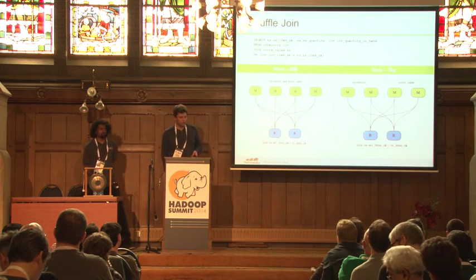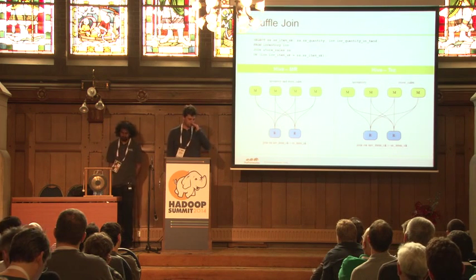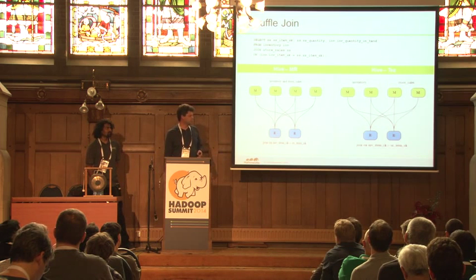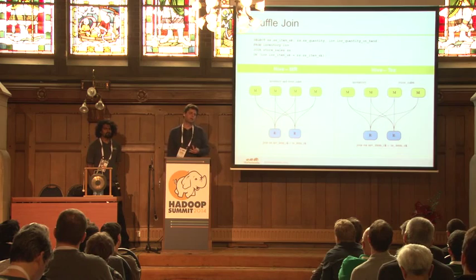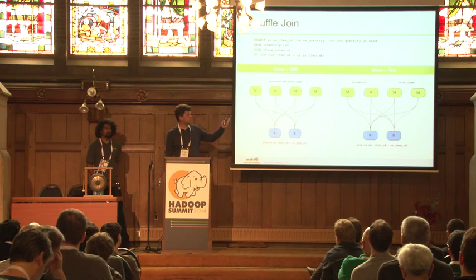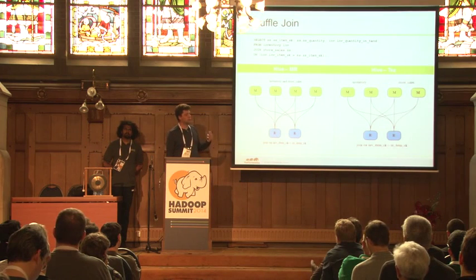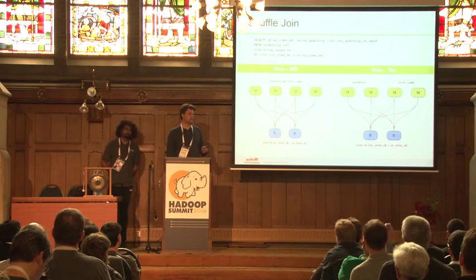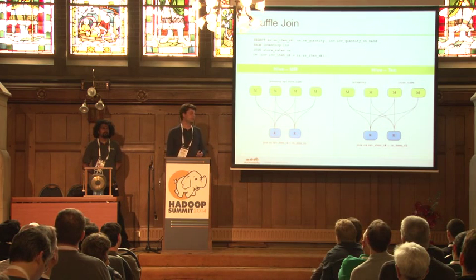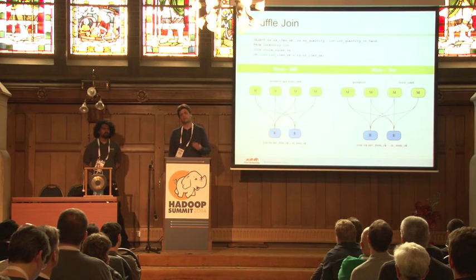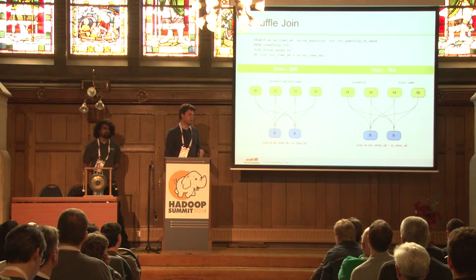The shuffle join is the classic join in MapReduce. In MapReduce, a single map task processes two operator pipelines for each table. In TEZ, we can split those out and create two separate vertices. This means we don't have to tag each row with which table it came from, and mappers don't have to switch between operator pipelines — which helps with CPU cache efficiency since switching operator pipelines clears the processor cache.